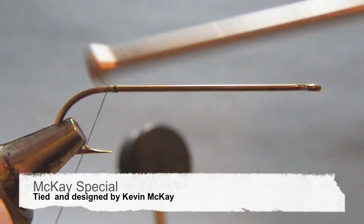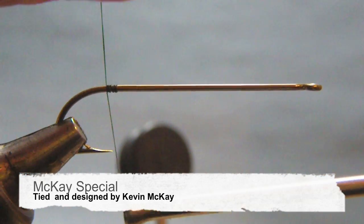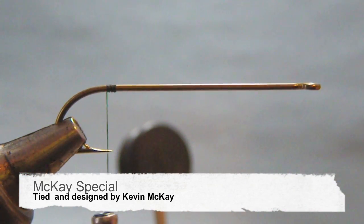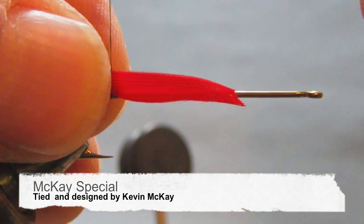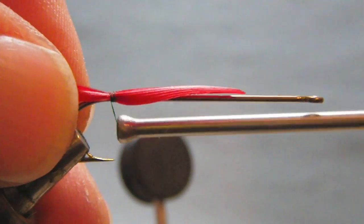I'll tie my thread right on the rear of the hook shank. This is where I'll tie in my red turkey quill. It's only about the length of the hook point.